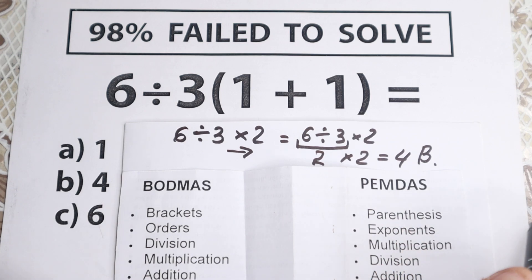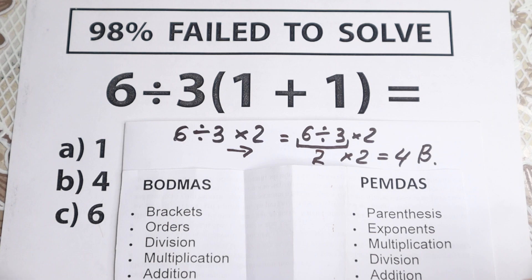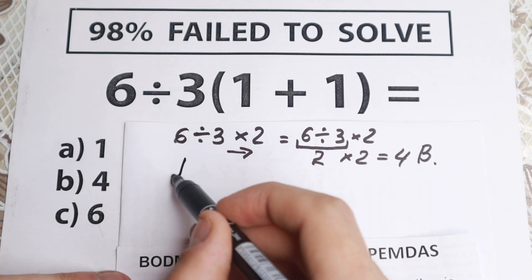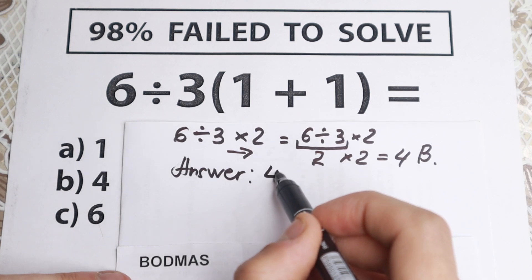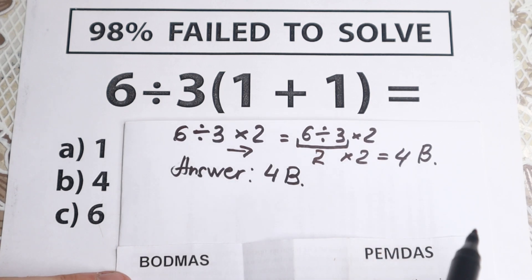So the correct answer is 4. 1 is incorrect. I'll write right here according to these orders: we will have our answer equal to this expression equals 4, option B.